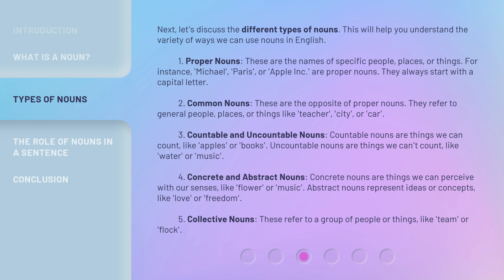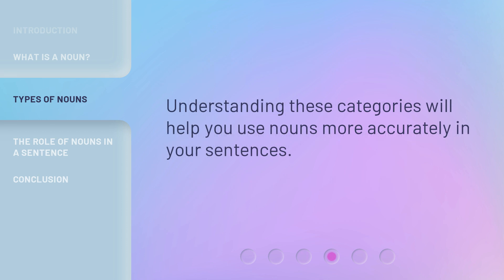Fourth, concrete and abstract nouns. Concrete nouns are things we can perceive with our senses, like flower or music. Abstract nouns represent ideas or concepts, like love or freedom. Fifth, collective nouns. These refer to a group of people or things, like team or flock. Understanding these categories will help you use nouns more accurately in your sentences.